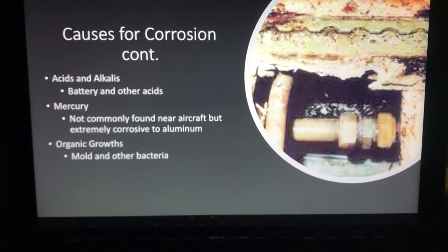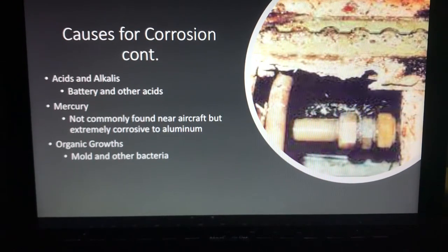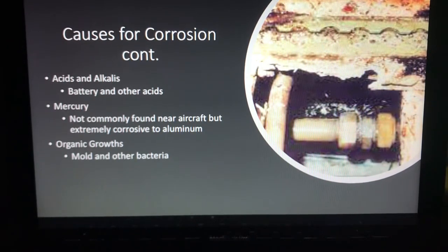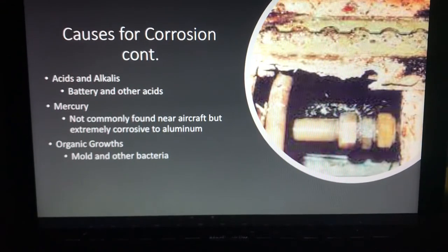A couple more causes for corrosion: acids, which you'll find in things like your batteries. Mercury — it's not commonly found near aircraft, however if it does come in contact with the aluminum on an aircraft it is extremely corrosive, so stay away from that. And then organic growth, such as mold, algae, and other types of bacteria that grow in or around the aircraft.